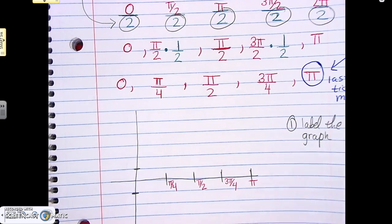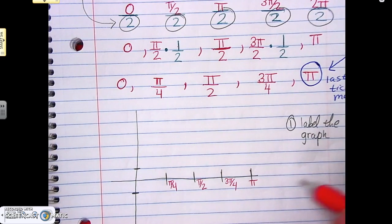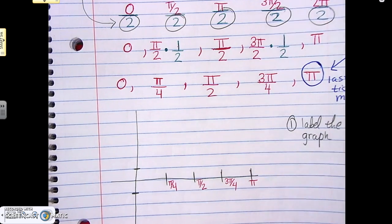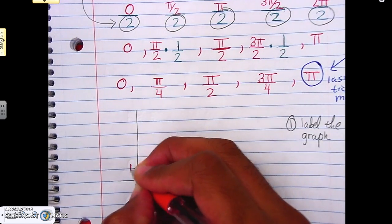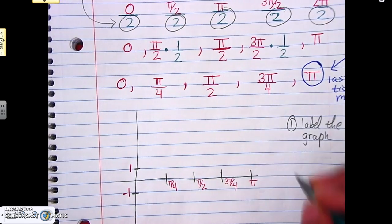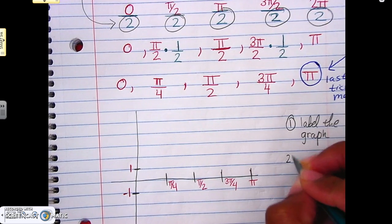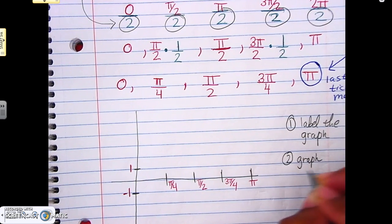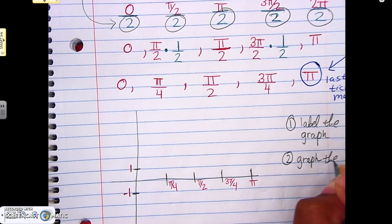So if you look at it, everything kind of shrunk, because normally our period ends way over here at 2π, but now everything's shrunk and it's going to end here at π. Okay, so not bad. And then let's go ahead and label these parts to one and negative one. So we labeled it, yay, whoo! We did it. Okay, number two is to graph the parent graph.